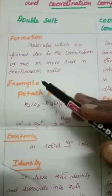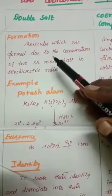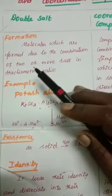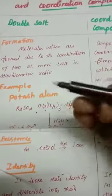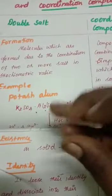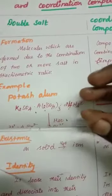Double salts are molecules which are formed due to the combination of two or more simple salts in stoichiometric ratio. That is, two or more simple salts when combined together in equimolar ratio, we can get the double salt.